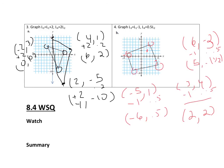And for the point at negative 3, negative 5: subtracting 1 gives me negative 4, and multiplying by 0.5 gives me negative 2.5. So negative 4, negative 2.5 goes right here. Now if I connect those points, I have shifted backwards 1 and shrunk it down by half.